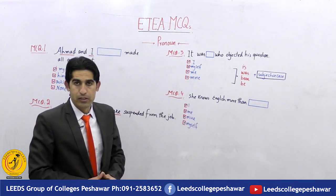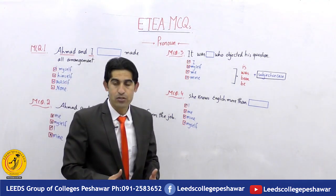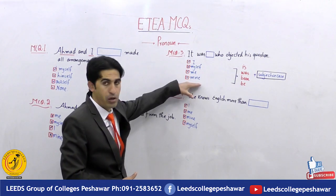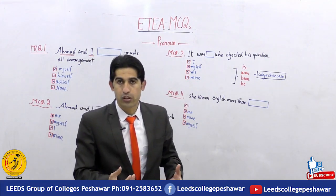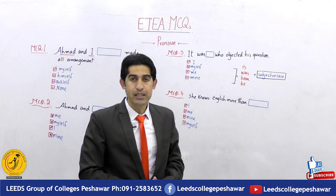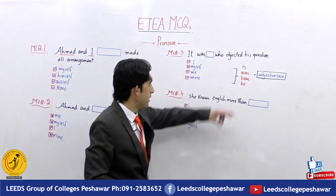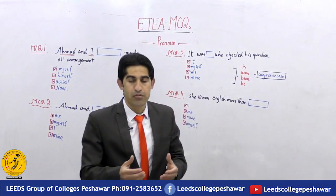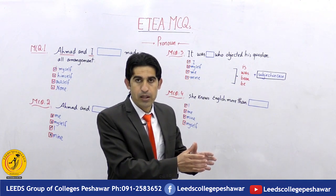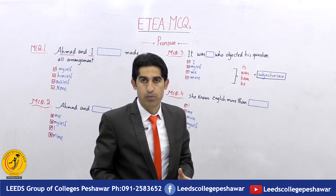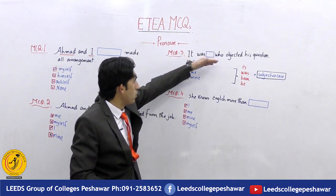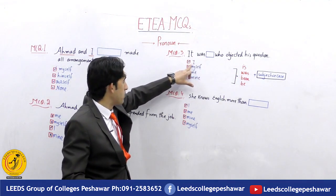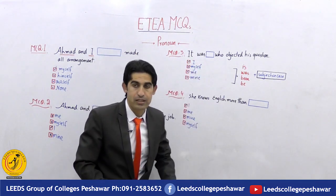MCQ number three: 'It was ___ who rejected his question.' This sentence is quite technical. In English, specific linking verbs — is, was, been, and be — take the subjective case of the pronoun. So the correct sentence is: 'It was I who rejected his question.' We have the verb 'was' and it takes the subjective case 'I'.